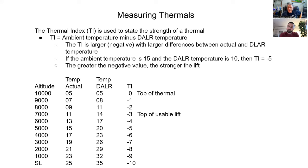As you get higher in a thermal, it's not as strong as it was closer to the ground. Minus three is an important number — it's considered the top of the usable lift. There is lift above minus three, but a glider banked over in a circle has a natural sink rate, making that climb very slow. You're better off leaving the thermal at minus three.